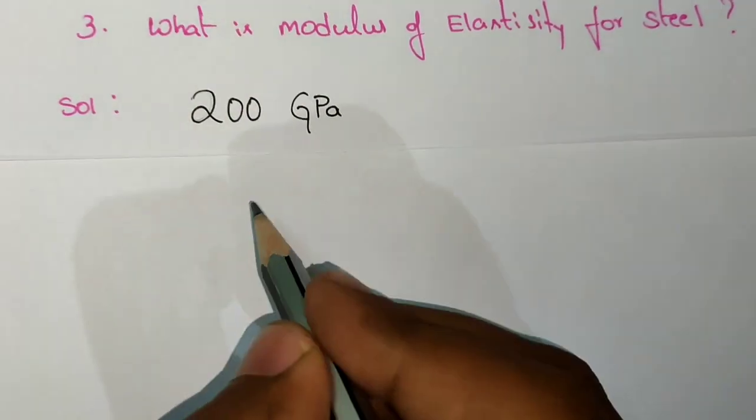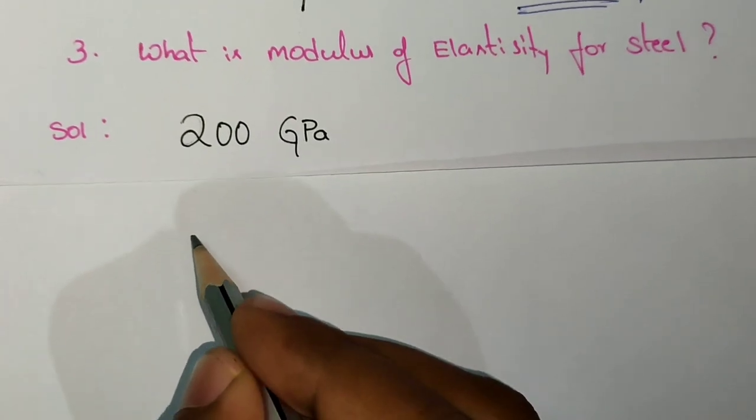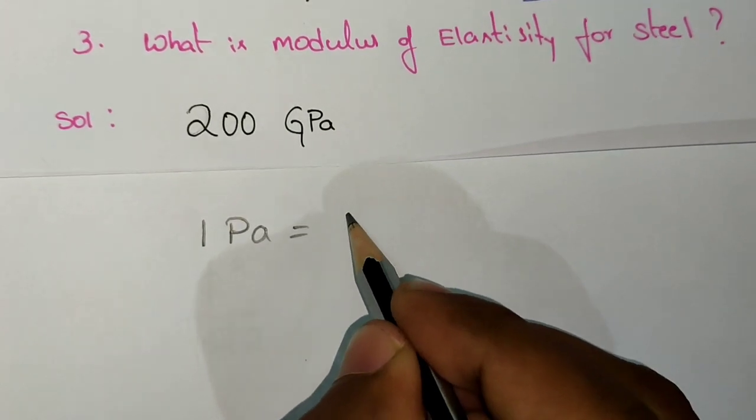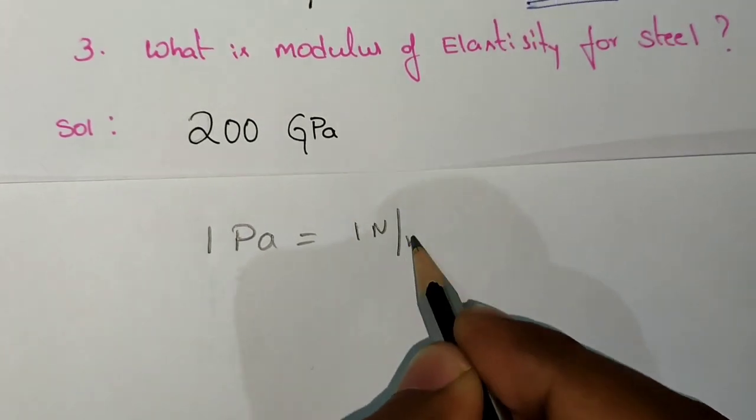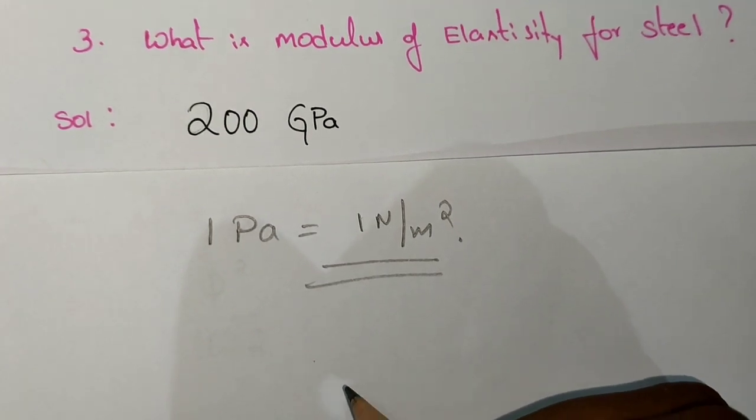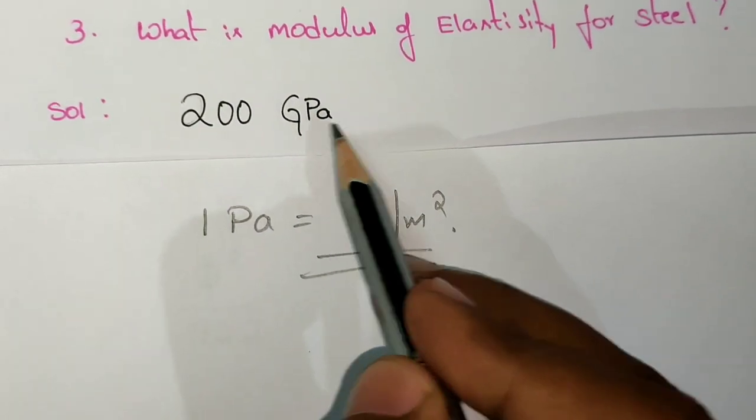Pascal is the unit for stress. 1 Pascal equals 1 N per meter square. Pascal is the unit of stress, which is also the unit of pressure.